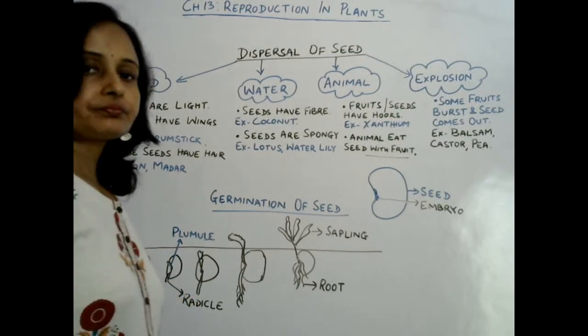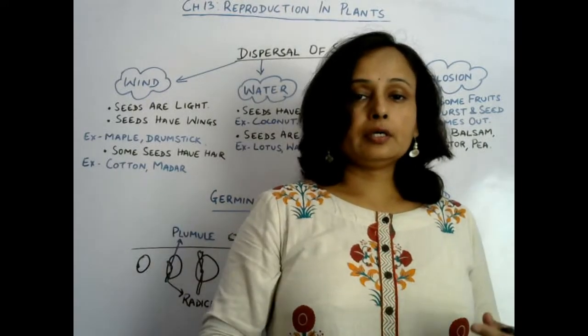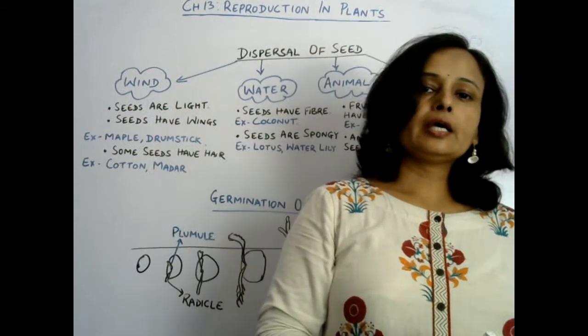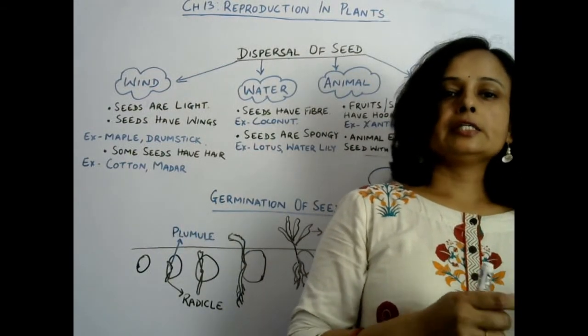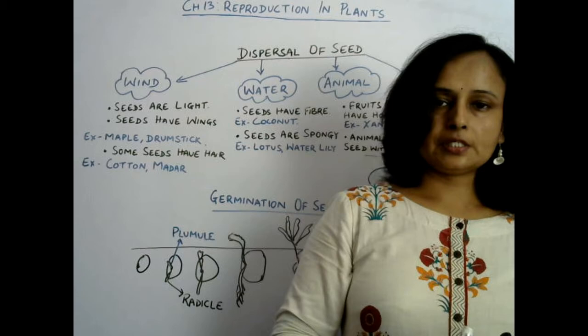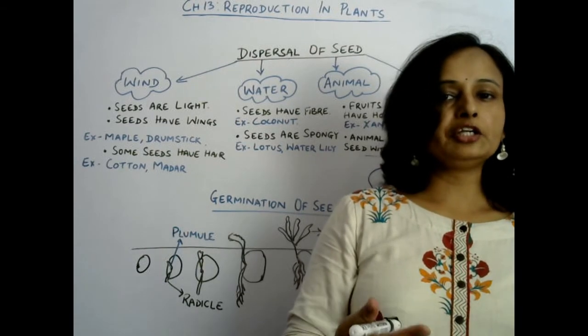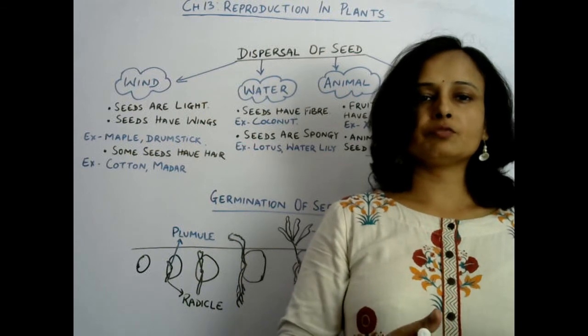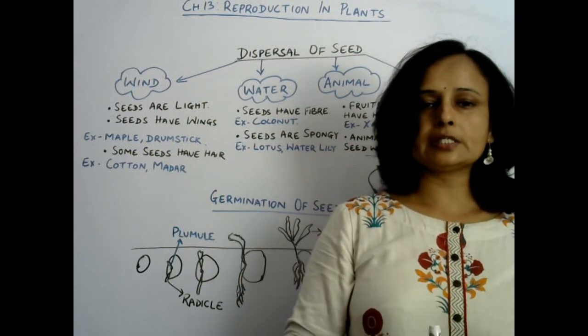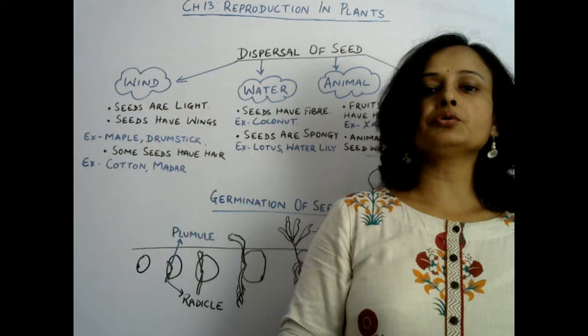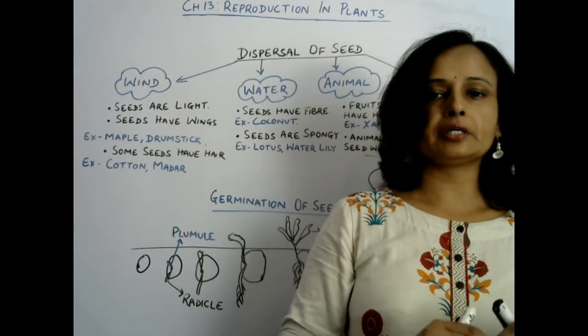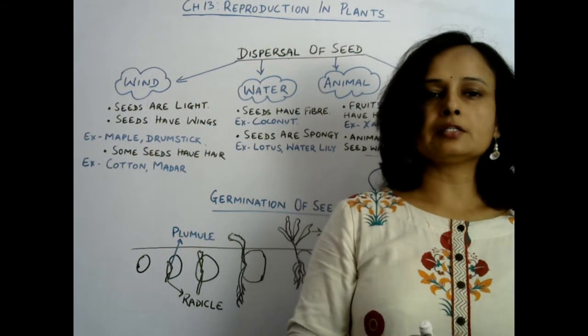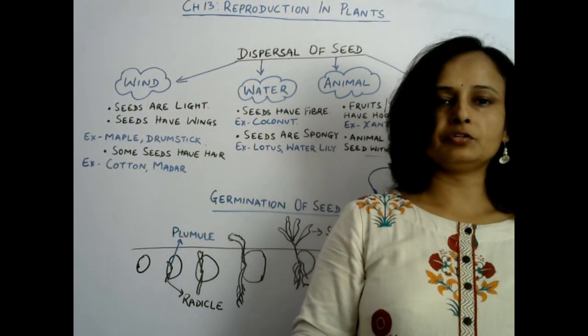So for reproduction, after all this process, to get a healthy plant, dispersal and germination of seed is necessary. Then only new generation of plants can come in this world. Now our chapter is completed. If any doubt related with the chapter, you can write in the comment section, and I will try to give answer to your queries. Now you look at the screen.